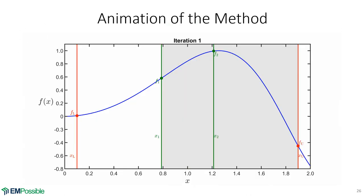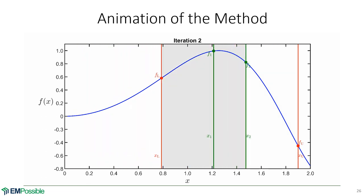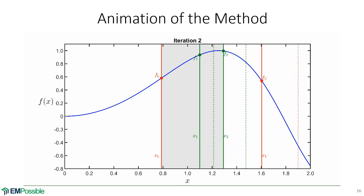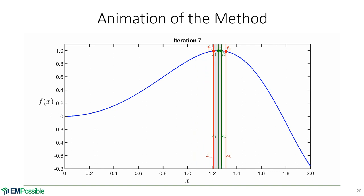An animation — if a picture is worth a thousand words, an animation is worth a million. Iteration one: we've calculated our four points, evaluated the function at all four, and identified that the maximum is on the right-hand side. Now we iterate, watching how points from the previous iteration fall exactly onto points of the next iteration. Going from iteration one to iteration two, notice how those old points land exactly on points of the new iteration — that's why we only have to evaluate the function at one new point per iteration.